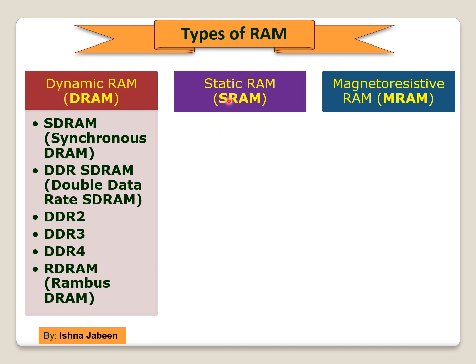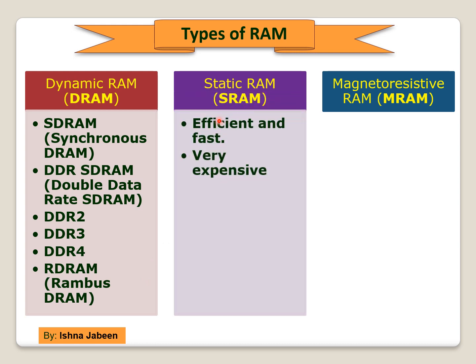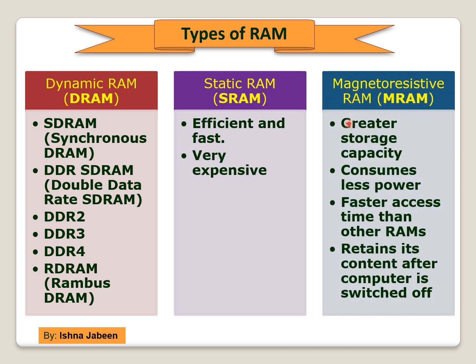Static RAM (SRAM) is efficient and fast but very expensive. Magnetoresistive RAM (MRAM) is a newer type of RAM which stores data using magnetic charges instead of electrical charges. MRAM has greater storage capacity, consumes less power, and has faster access time than other RAMs. MRAM also retains its content even after the computer is switched off.